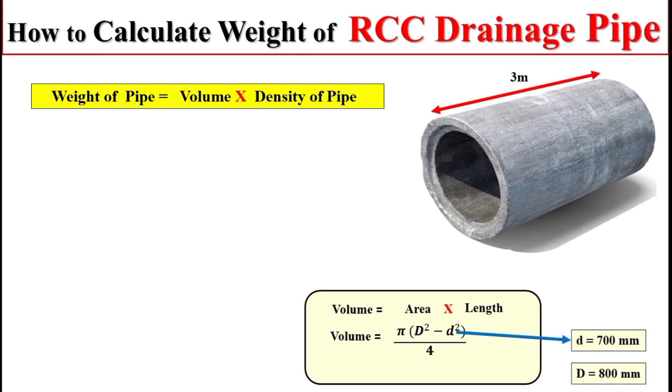Now dear students, if we put these two values in this formula in terms of meters and then we multiply this total surface area with the total length of the pipe, we can get the total volume of the pipe.